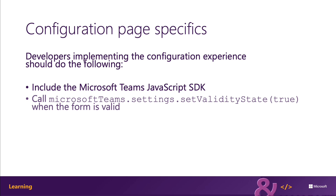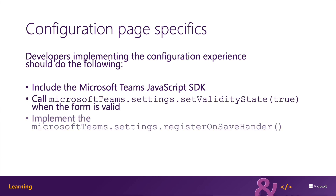You should do this as a response to valid user input such as a selection or a field update. You then register an onSaveHandler event handler that will be called when the user clicks save, and then call the setSettings method to save the connector settings.